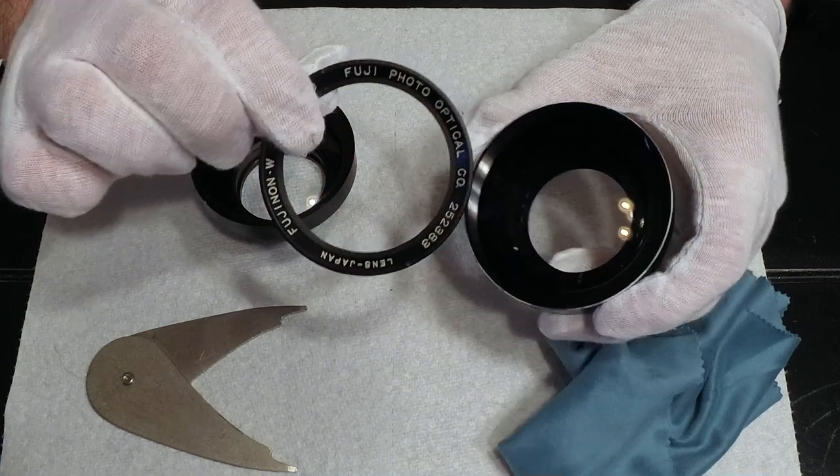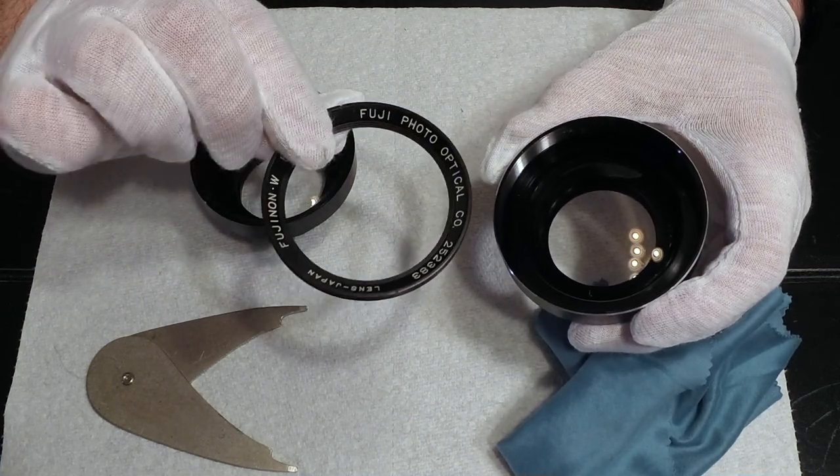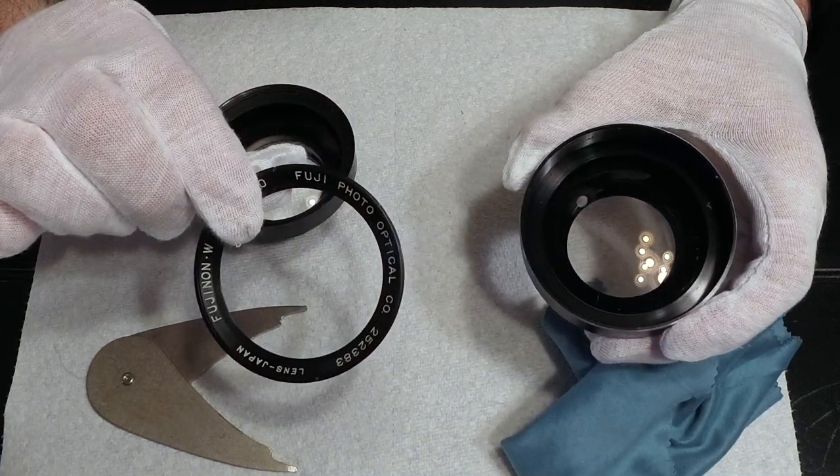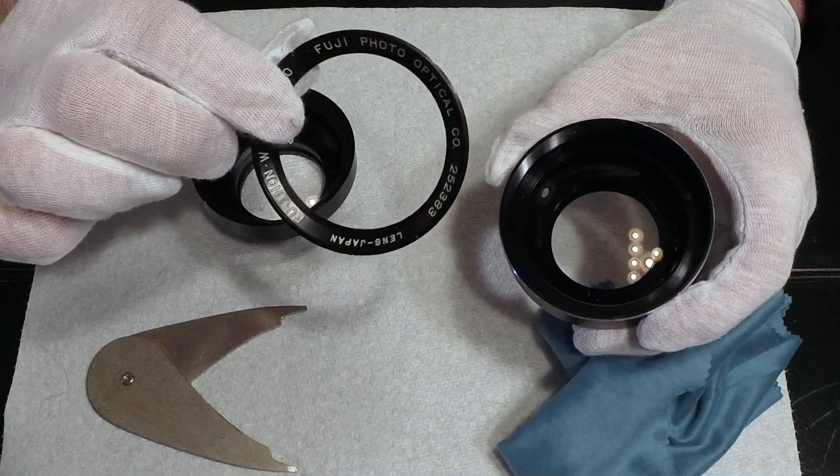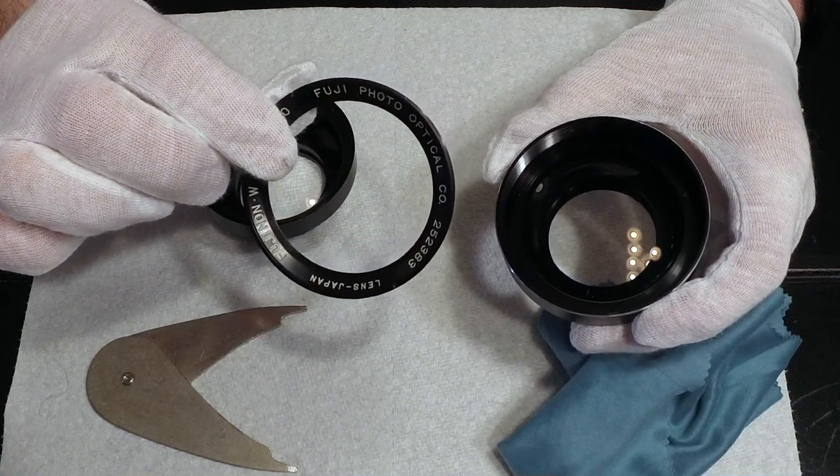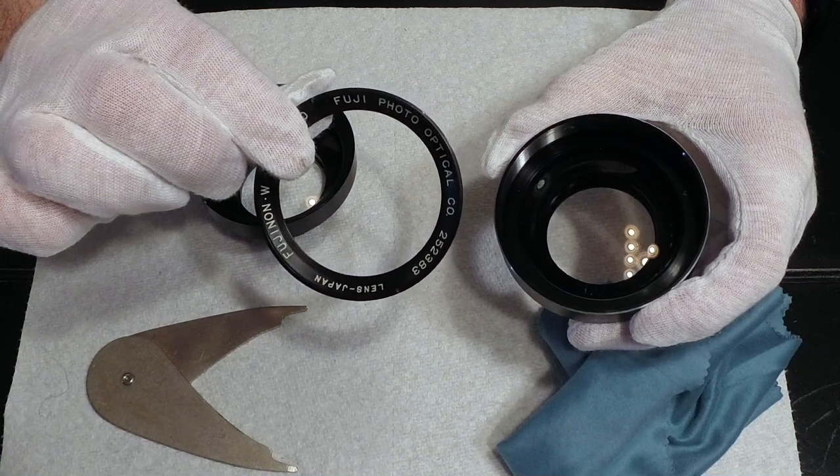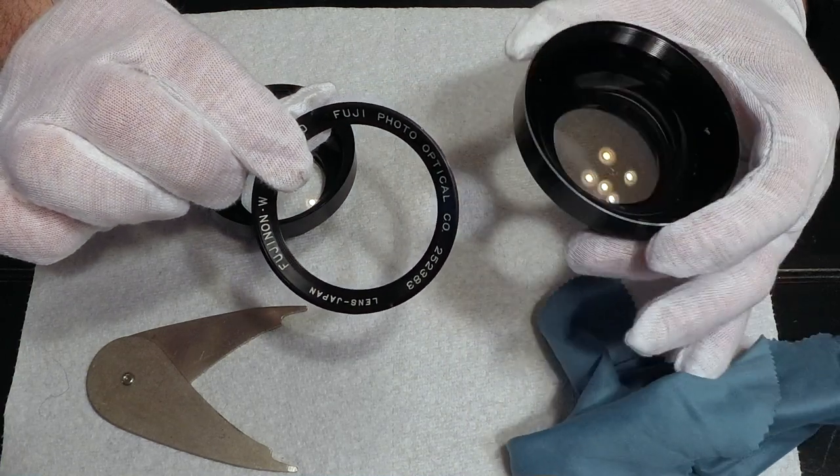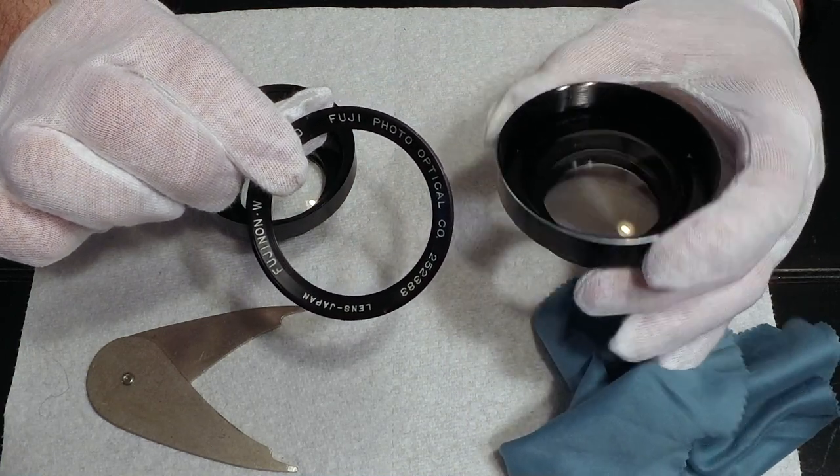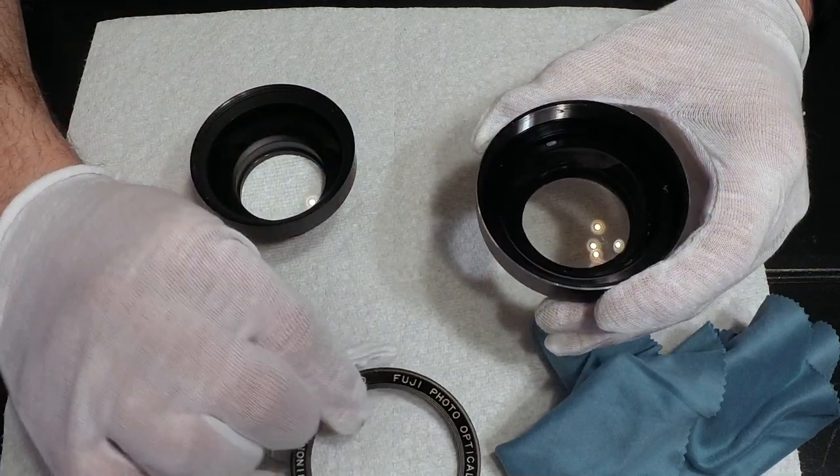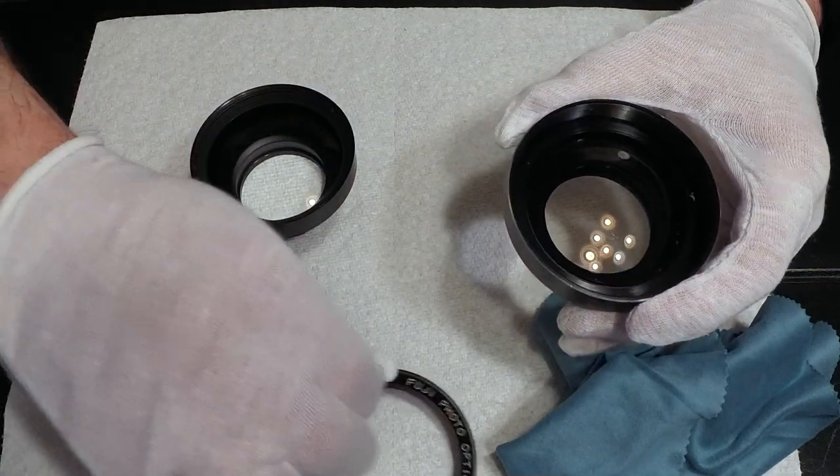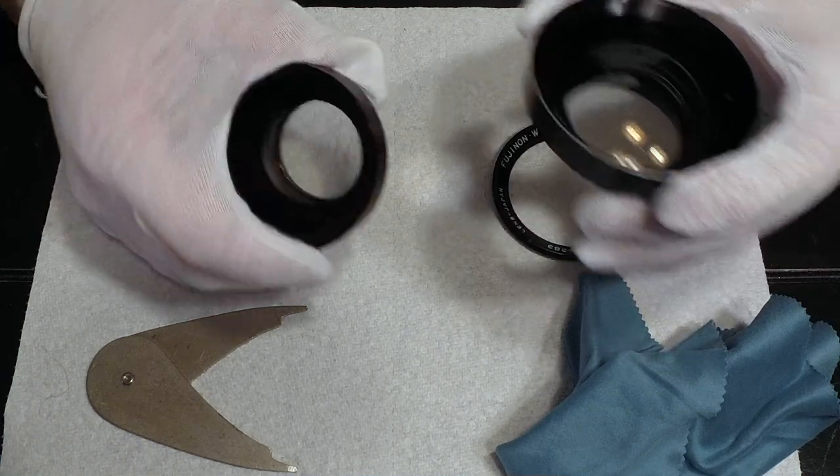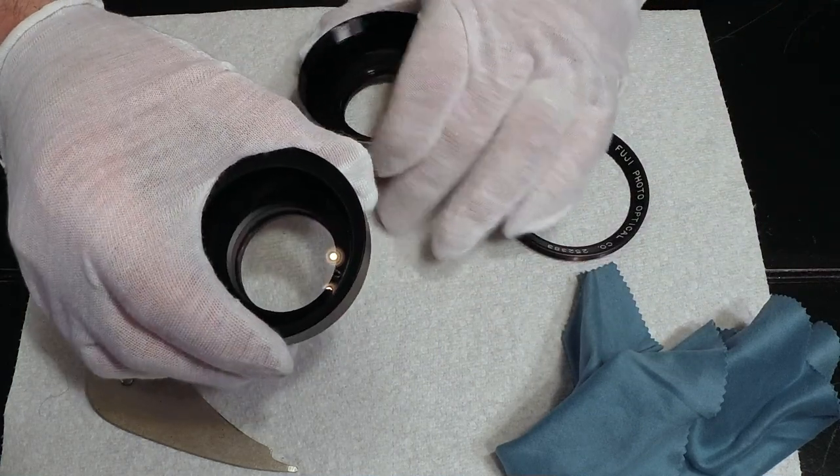Actually, this retaining ring is quite deep, I'm surprised. Normally they're not this deep. So there, I've got the retaining ring out now. Once you drop the lens elements out, it is very important that you make sure that you note the order that they go in. Obviously you don't want them to fall out and hit anything and get damaged. I'm going to move the rear element out of the way now.